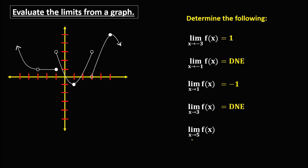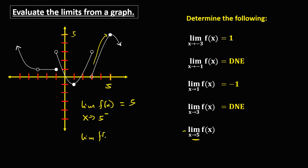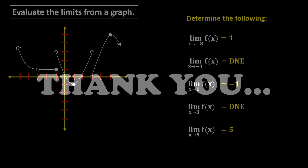Then the limit of f of x as x approaches positive 5. This is x = positive 5. The limit of f of x as x approaches positive 5 from the left is equal to 5. And the limit of f of x as x approaches positive 5 from the right is also equal to 5. Since the left side limit is equal to the right side limit, therefore the limit of f of x as x approaches positive 5 is positive 5.